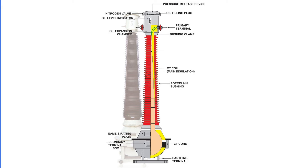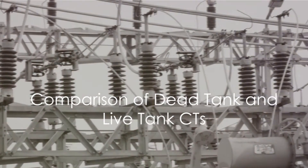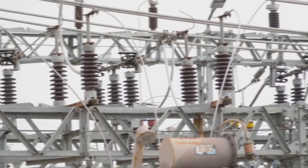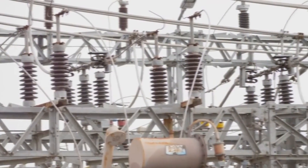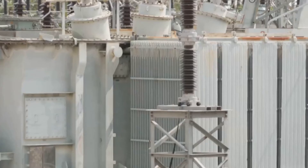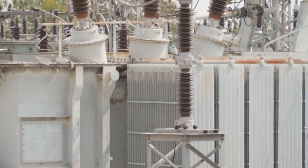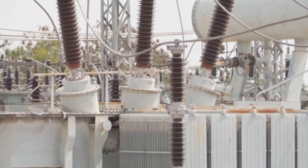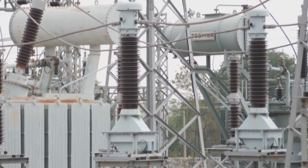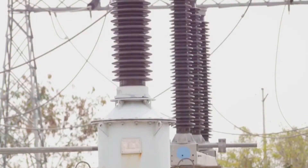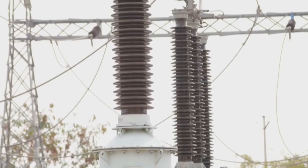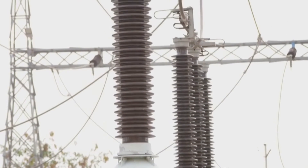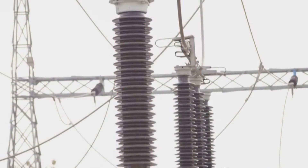Heat generation during short-time thermal current is also at its maximum in dead tank CTs. In summary, live tank CTs are compact, economical, and generate less heat due to their shorter primary winding. They're also easier to insulate and have better transient performance. On the other hand, dead tank CTs are bulkier, pricier, and generate more heat. They're also harder to insulate and potentially more prone to insulation damage due to mechanical forces.